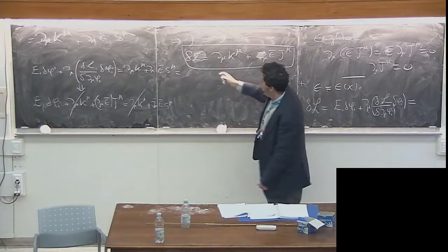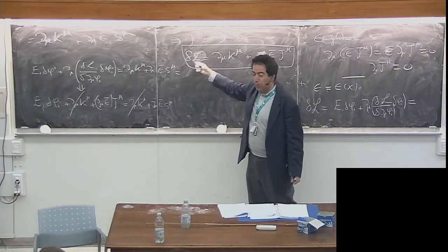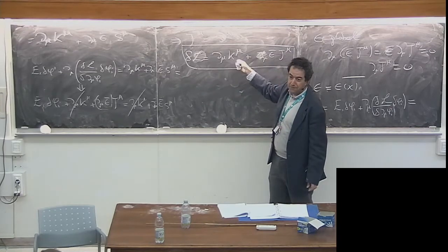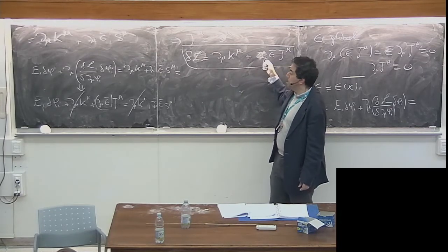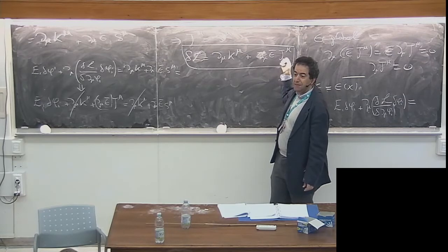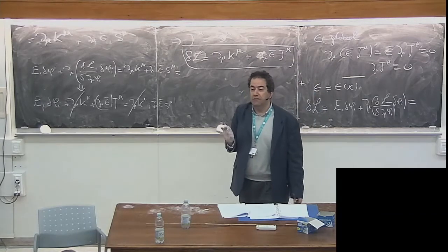So our Lagrangian will transform as a total derivative plus the derivative of the supersymmetry parameter times the conserved Noether current.